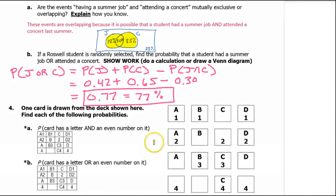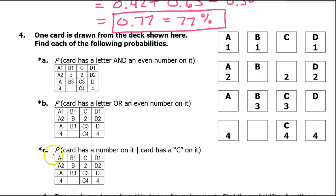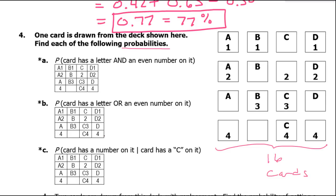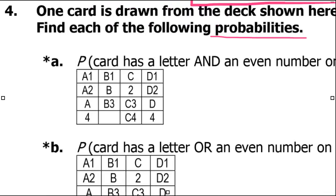Now let's move on to the cards. One card is drawn from the deck shown here — find each of the probabilities. Since we're talking probability, we're going to be doing target over total. At a glance, you can see that there are 16 cards in this deck. So keep in the back of your mind that the total for each of these problems will be 16, unless it's a given problem which gives us a new total. Each problem gives us a little mini picture of the deck.